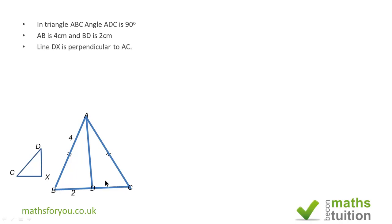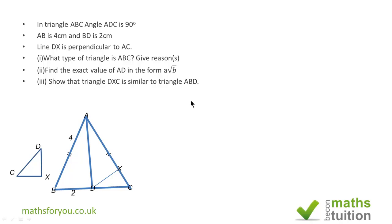We've got line DX perpendicular to AC, and the questions are: what type of triangle is ABC? Give a reason. Find the exact value of AD in the form A√B. Show that triangle DXC is similar to triangle ABD. And what is the length of AX?